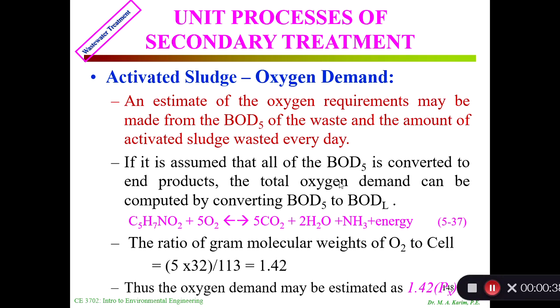This is the equation: the cell plus oxygen yields carbon dioxide, water, ammonia, and energy. Methane will not be coming here because it's aerobic. The ratio of the gram molecular weight of oxygen to the cell - if I calculate this, I get 113 and 5 times 32 will give 1.42 times of oxygen. That's the total oxygen required per cell of the molecule.